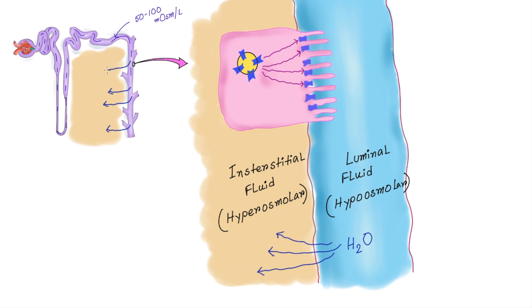So if ADH is present, distal part of the nephron will be water permeable and you will pass concentrated urine. But if ADH is not there, extra water will come out of your body as diluted urine.